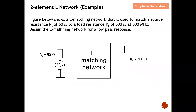Let's look at a design example. The figure shows an L matching network used to match a source resistor of 50 Ω to a load resistor of 500 Ω at 500 MHz. The task is to design the L matching network for a low pass filter response. So the given parameters are: RS = 50 Ω, RL = 500 Ω, and frequency = 500 MHz.